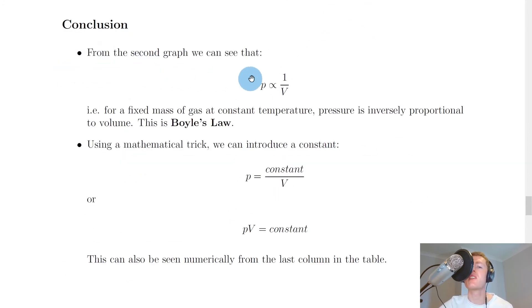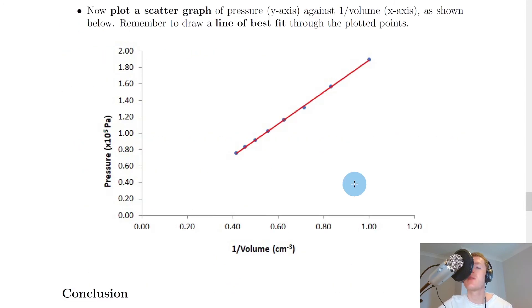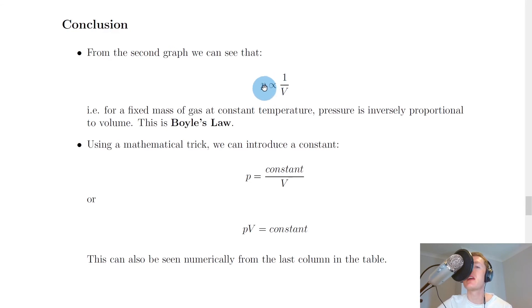From the second graph, we can see that pressure is directly proportional to 1 over the volume. At National 5 level, a line of best fit going through the origin means the two variables are directly proportional. This means as one goes up, the other goes up. As 1 divided by volume increases, pressure also increases. Or as 1 divided by volume decreases, pressure decreases. But remember, directly proportional to 1 divided by something is the same as saying inversely proportional to that thing. 1 divided by something is an inverse.